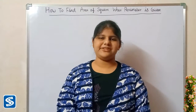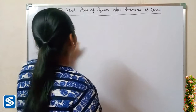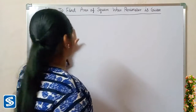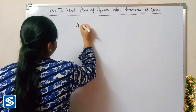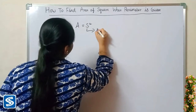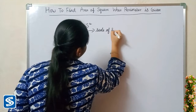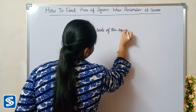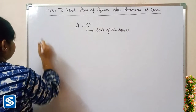Hi friends, welcome to Samish channel. In this video I'm going to teach how to find the area of a square when the perimeter is given. To find the area of a square we use the formula: area A is equal to S squared, where S is the side of the square. Now we will take some examples.